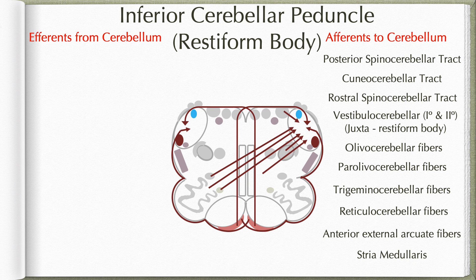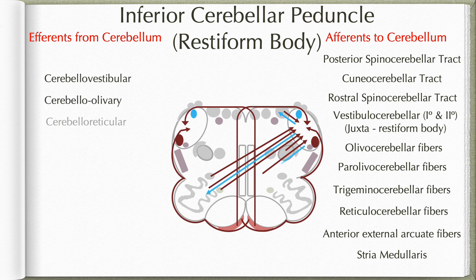So these are all the afferent inputs to the cerebellum via the inferior cerebellar peduncle: the spinocerebellar set, the vestibulocerebellar set, the trigeminocerebellar set, the reticulocerebellar set, and fibers from the contralateral inferior olivary nuclear complex and contralateral arcuate nuclei. Coming to the efferents from the cerebellum, they include cerebellovestibular fibers, cerebelloolivary fibers, and cerebelloreticular fibers. So the inferior cerebellar peduncle has predominantly afferent input to the cerebellum, and comparatively fewer efferent fibers coming from the cerebellum to various nuclei located within the medulla oblongata.